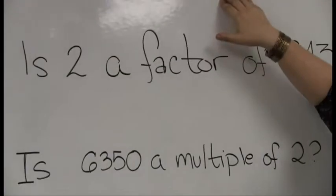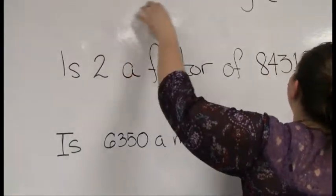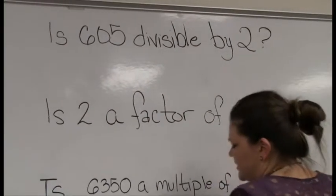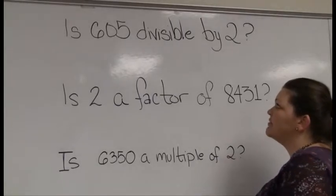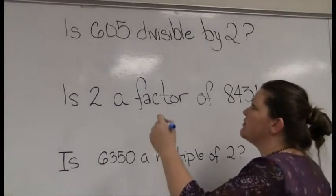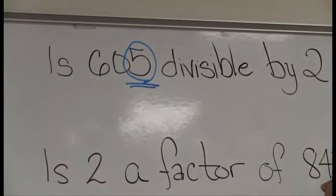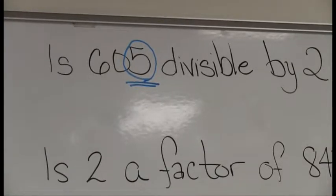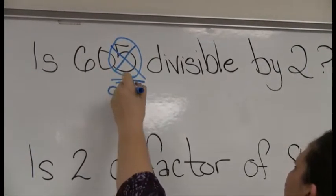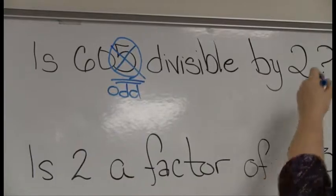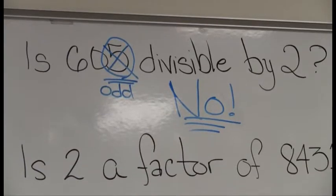Let's do a few simple problems. Remember, I can ask about divisibility in different ways. For example: is 605 divisible by 2? I'm too lazy to divide, so I'll use my trick — mathematicians always use a trick if they can. I examine the final digit. For a number to be divisible by 2, we need an even number at the end. The 5 is odd, therefore 605 is definitely not divisible by 2.